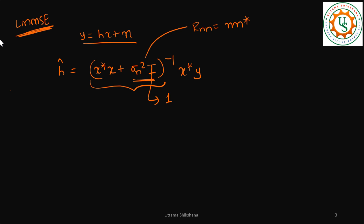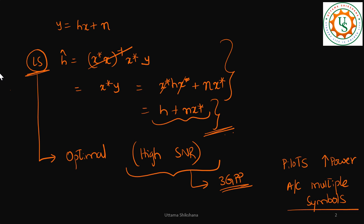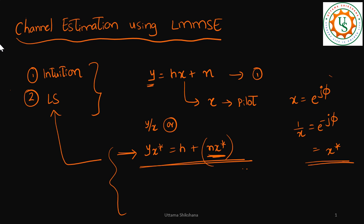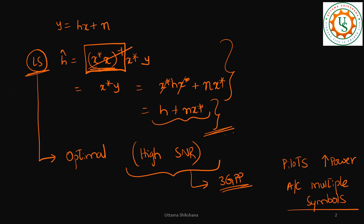If you are doing LMMSE estimation and this is a single equation, we need to perform an inversion — it would just be a scalar inversion. But if you go for a vector form, or in MIMO for a matrix form, then we definitely have to perform matrix inversion, which would take a lot of processing time. Even in least square, if you don't design the pilots in a certain way, the inversion becomes a matrix inversion and is costly.